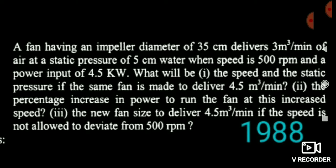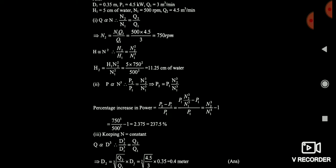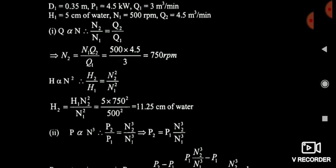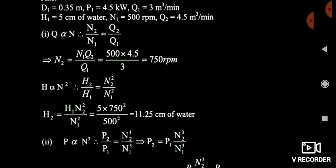Another question asked in 1988 looks very lengthy and difficult, but it is actually very easy. The impeller diameter is 35 cm and delivers 3 m³/min of air at a static pressure of 5 cm of water, with a speed of 500 RPM and power input of 4.5 kW. The same fan is made to deliver 4.5 m³/min. Q2 is 4.5 m³/min and Q1 is 3 m³/min. Using the linear relationship N2/N1 = Q2/Q1, we calculate N2 = 750 RPM.